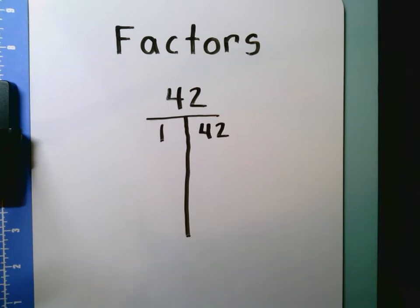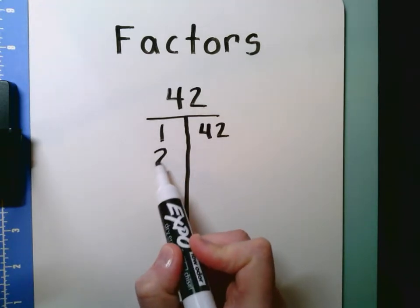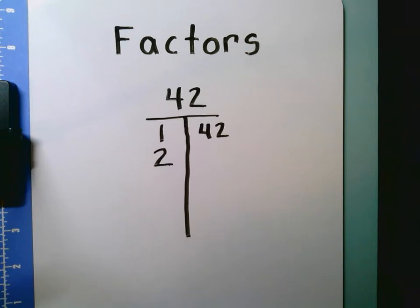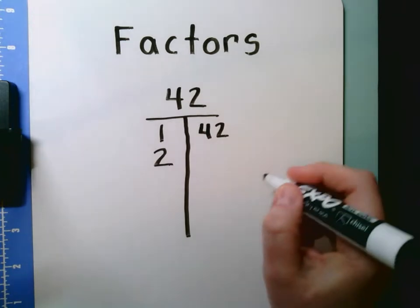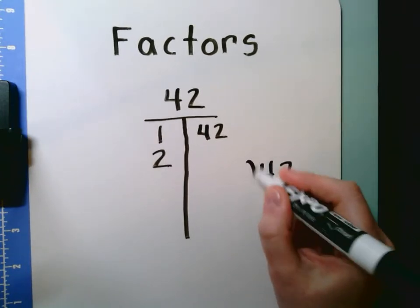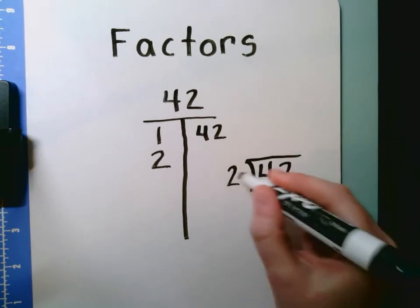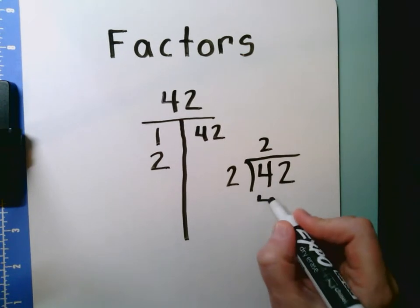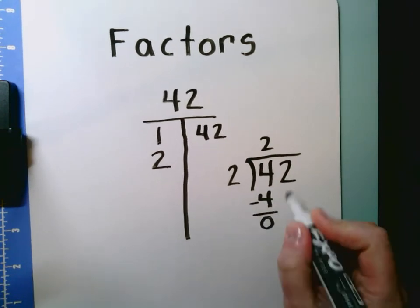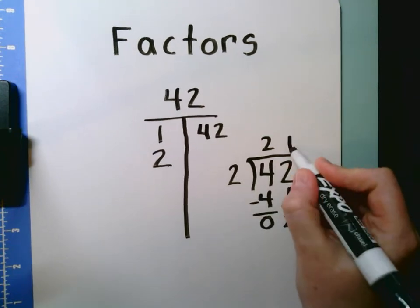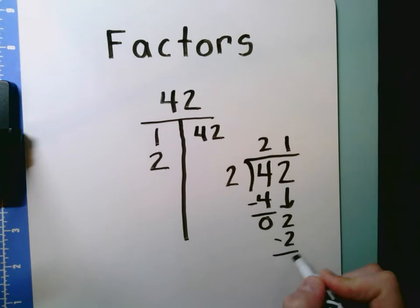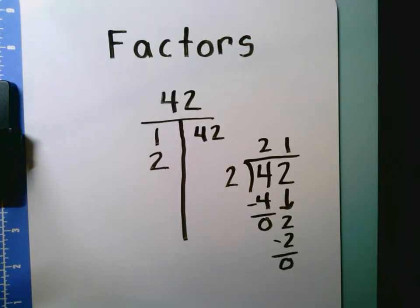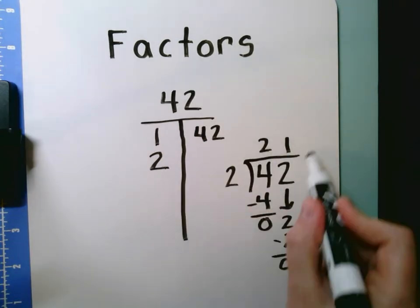The next number on the number line is 2. I know that 42 is an even number because it ends in a 2, but I'm not exactly sure what number times 2 equals 42. So I can use division to find out. I can put 42 into my calculator and do 42 divided by 2, or I can write out a long division problem. 2 times 2 is 4, 2 times 1 equals 2, and I don't have a remainder. When I don't have a remainder, I know that that number is also a factor. So 2 times 21 will give me 42.